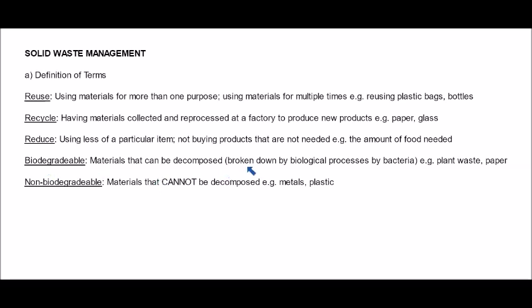Biodegradable refers to material that can be decomposed — it can undergo biological processes by bacteria and fungi, which are common decomposers. They're able to feed on these types of materials, which are normally organic materials from living organisms. Plant waste, vegetable and fruit scraps, and paper — which comes from trees — are typical examples. Decomposers can break these materials down and convert them into different chemicals or compounds.